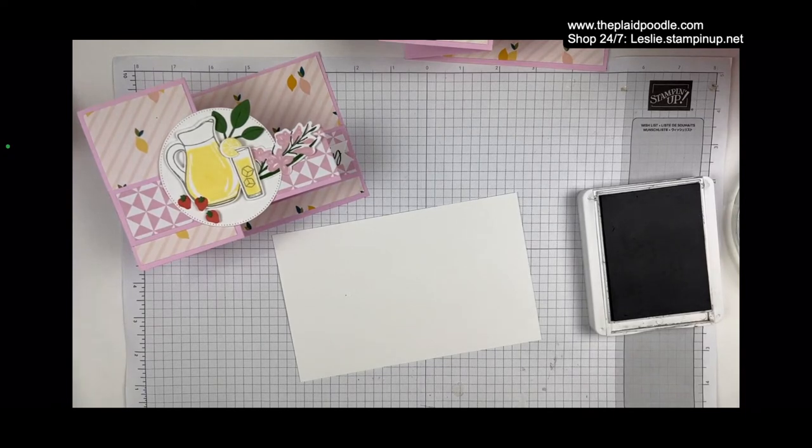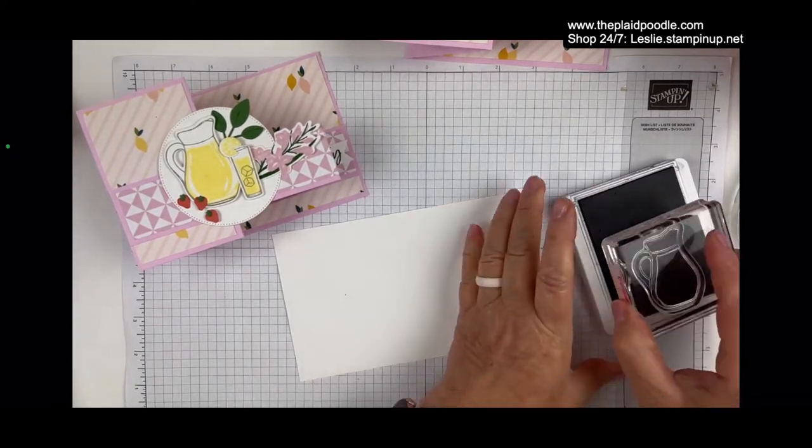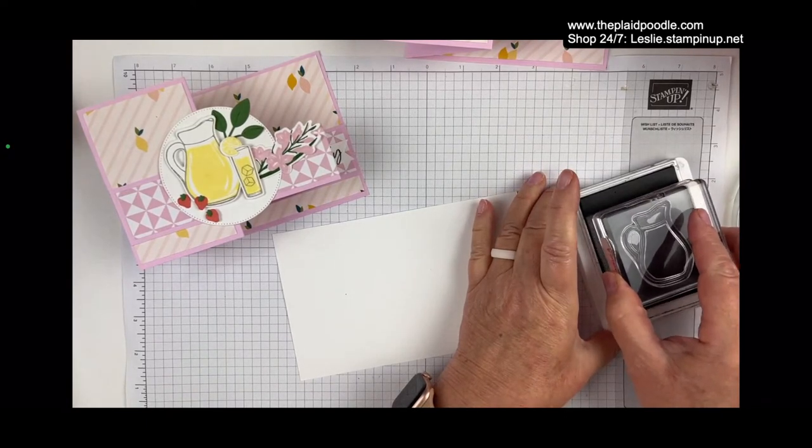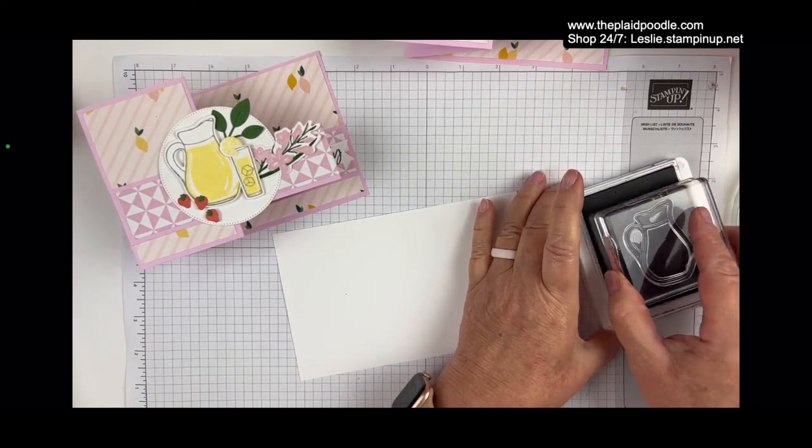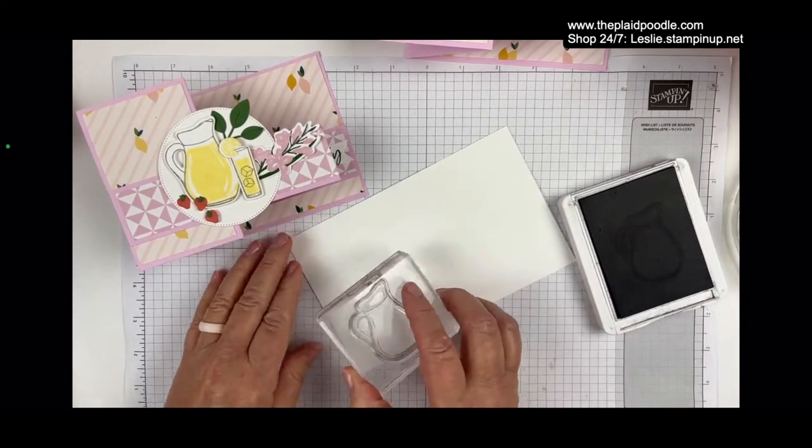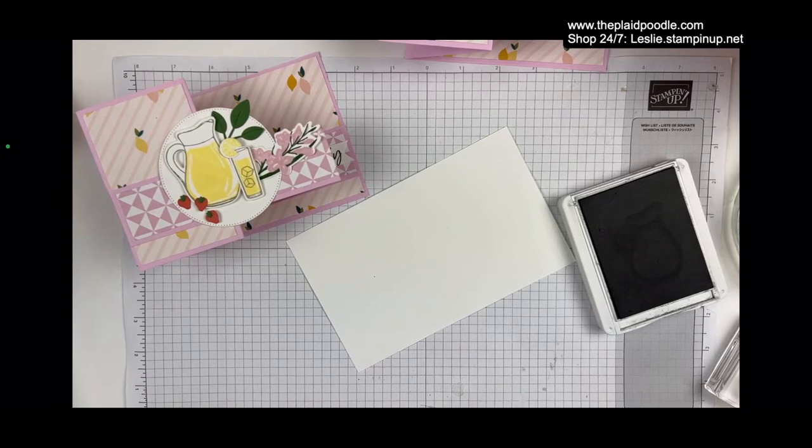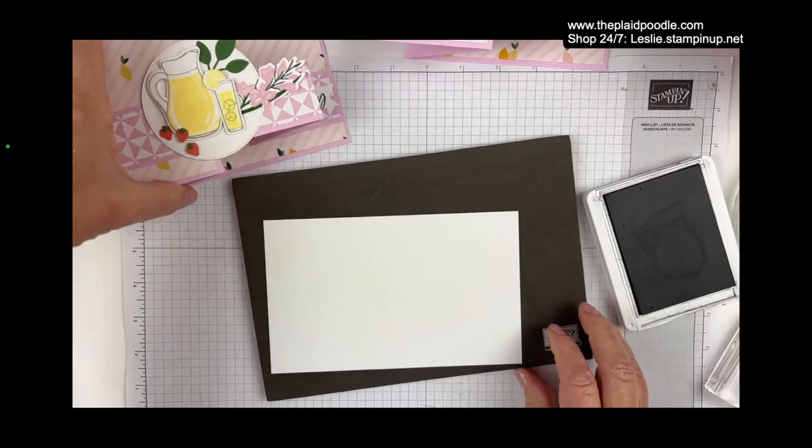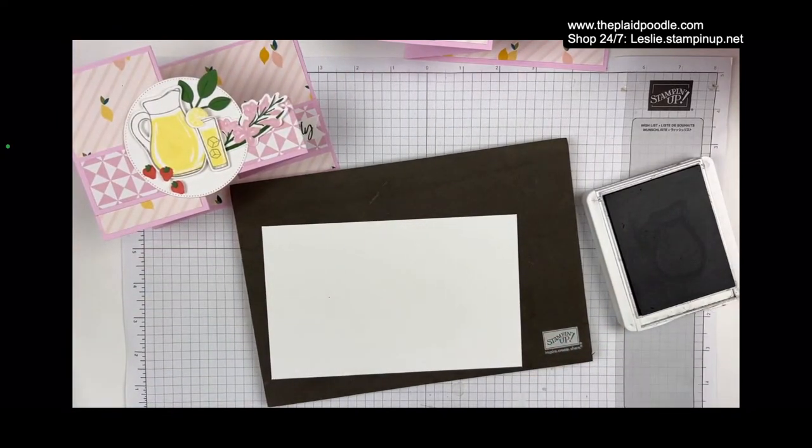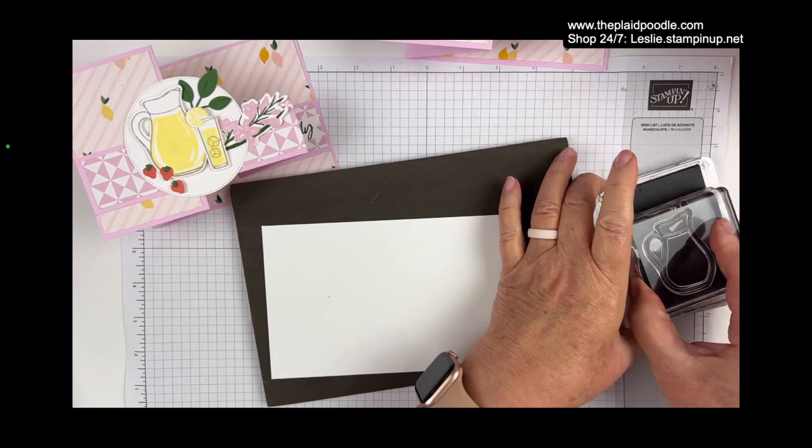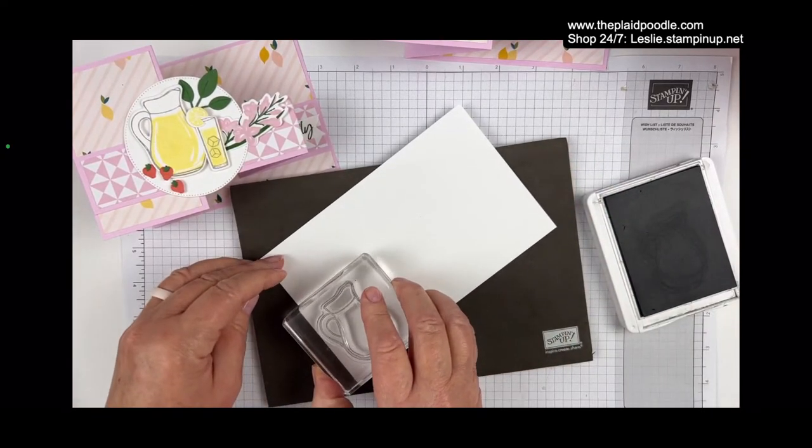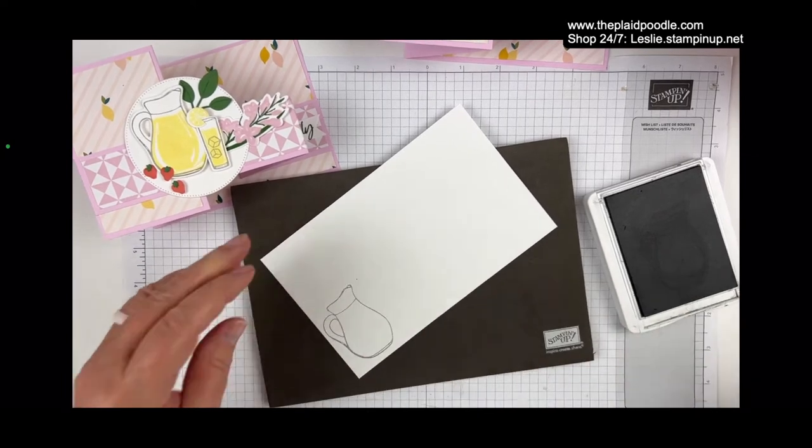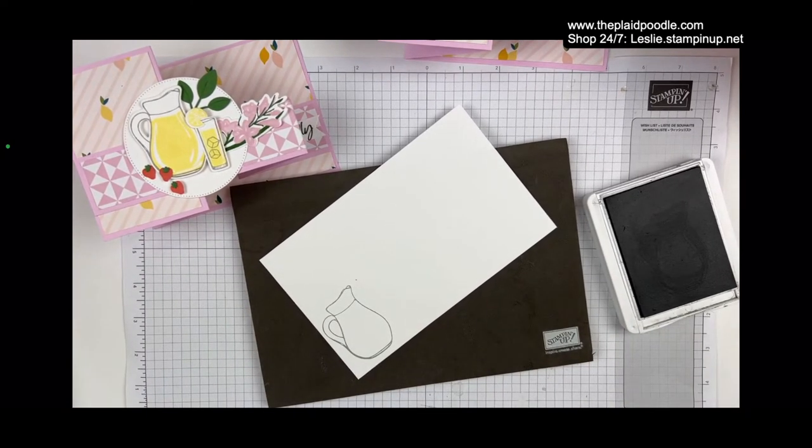So now the fun part. We get to do all the stamping. I'm using the Sew Refreshing Stamp Set and the dies. I just grabbed a big sheet of basic white cardstock. I'm going to stamp all of these images on here and cut them out in one swirl through the machine so we don't have to do 20 swirls. The first thing I'm going to do is stamp my pitcher.